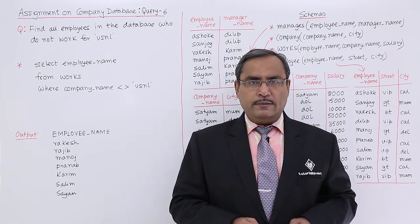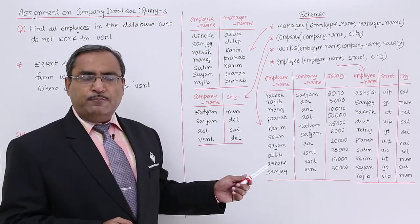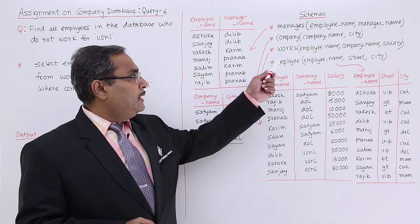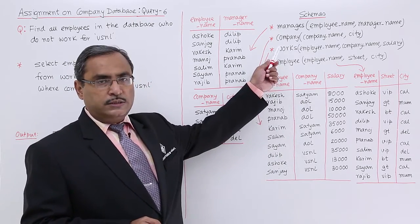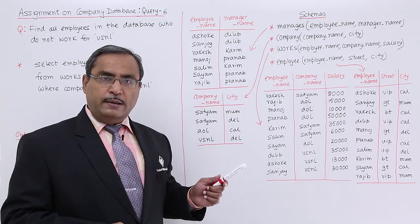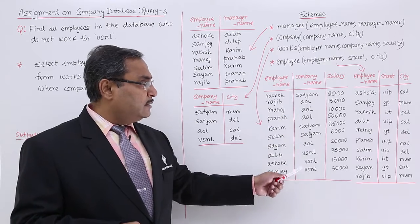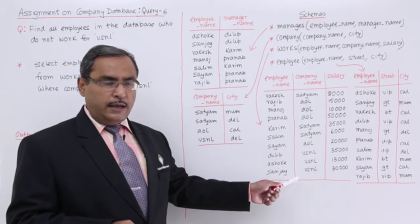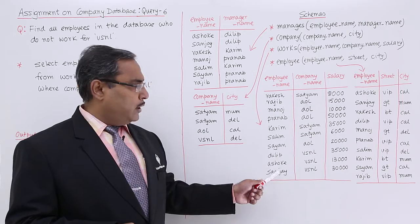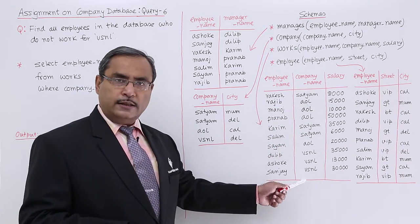This is a very simple query. Here, which employee is working in which company — the respective table name is works. We are having this employee name, company name, and the respective salaries. This is the table we are having, and here we are finding that only 3 employees are there who are working for VSNL.